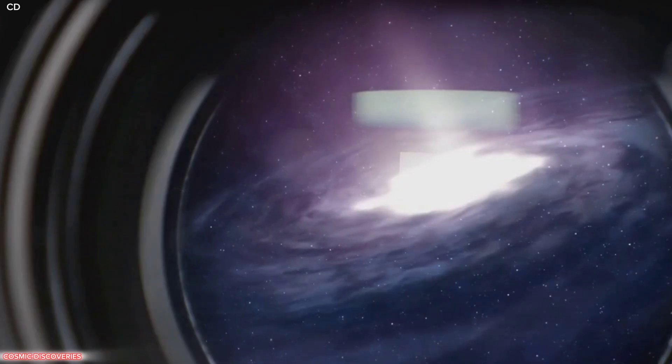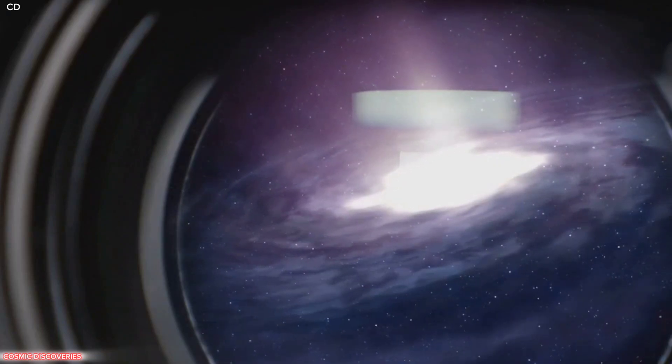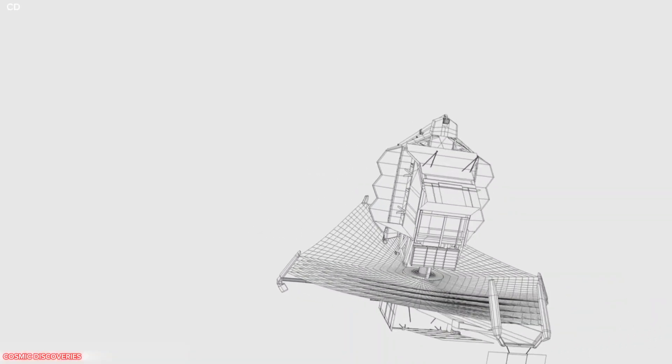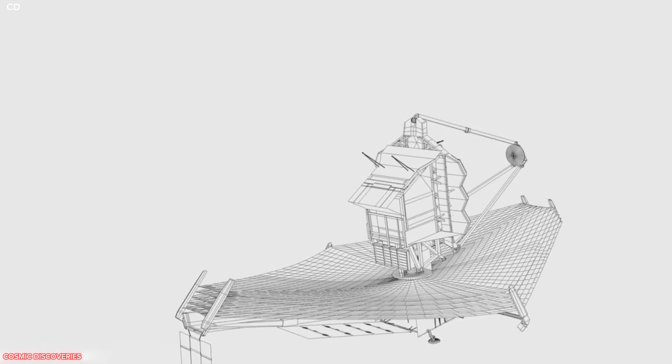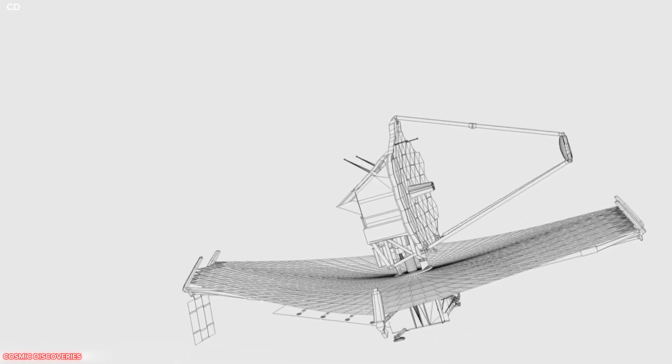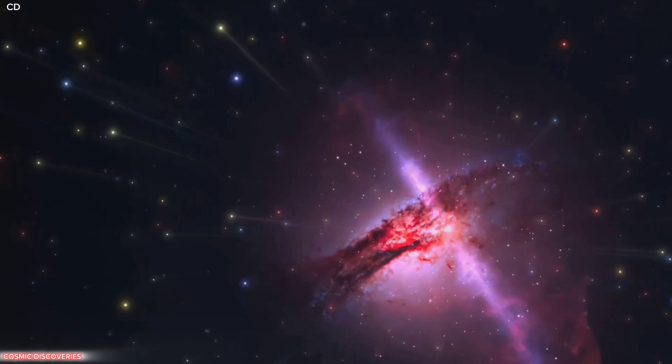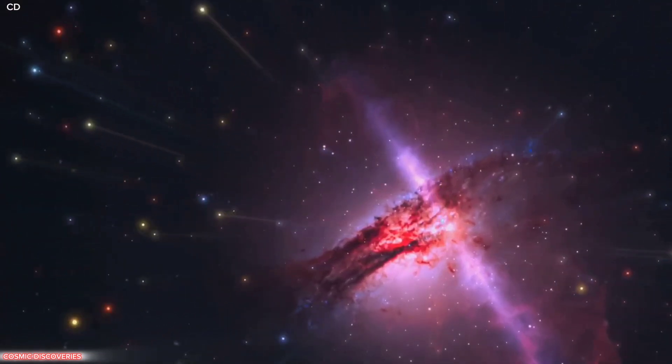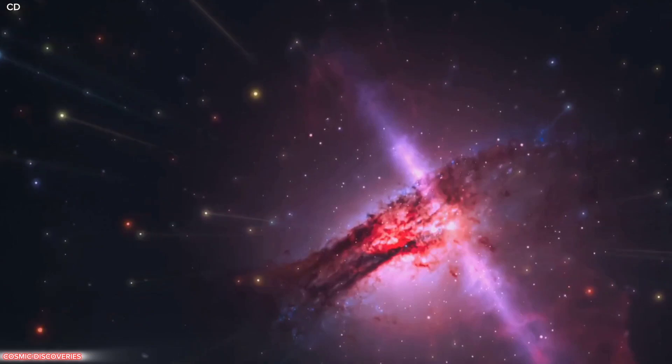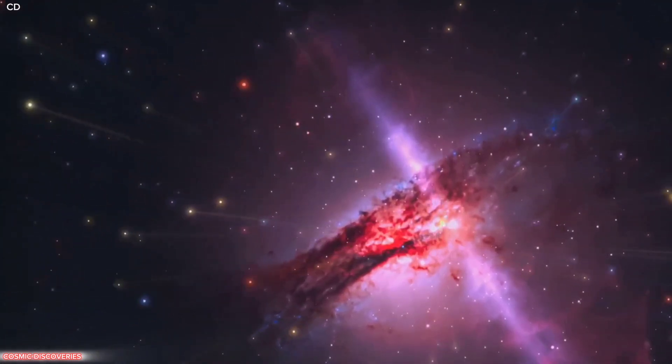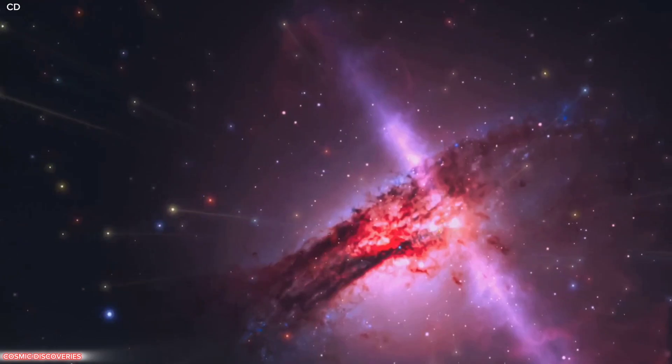What makes Webb unique is its ability to see in infrared, revealing light invisible to our eyes. As the universe expands, light from distant galaxies shifts into the infrared. So to see the first galaxies, we need this vision.